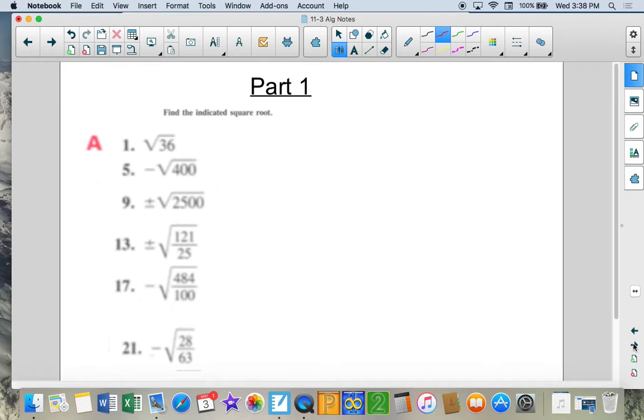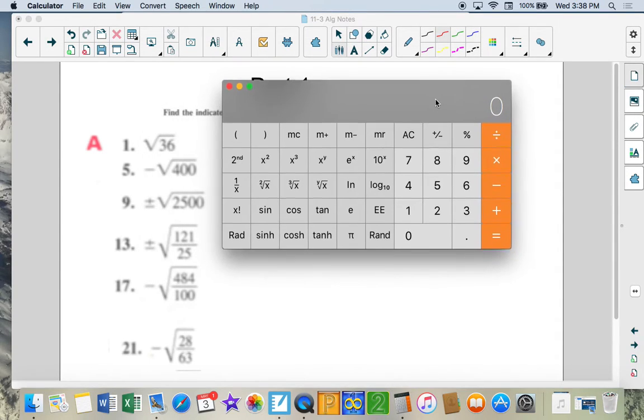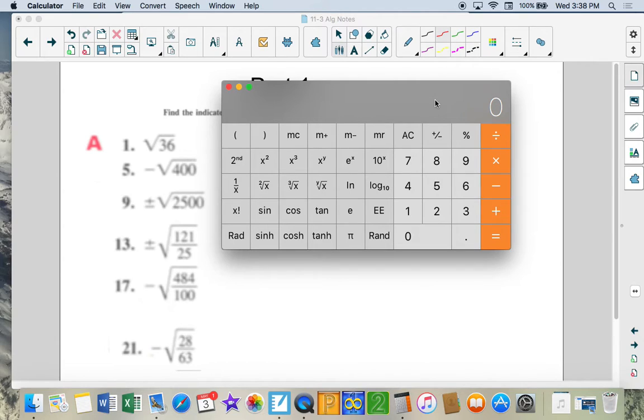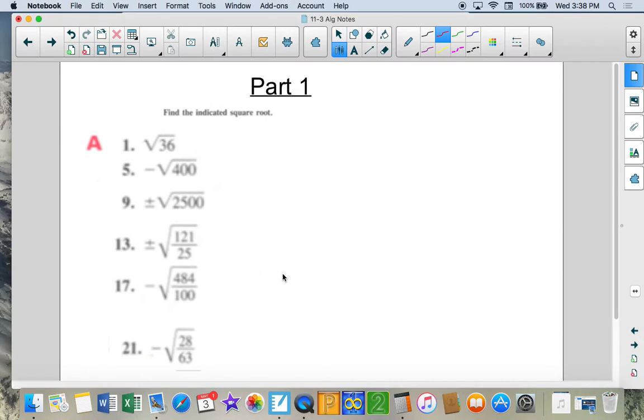So let's look at a couple of these. And the easiest way, outside of memorizing your perfect squares, is plugging them in. So we're going to do 36, you're going to hit the square root button, you get 6.